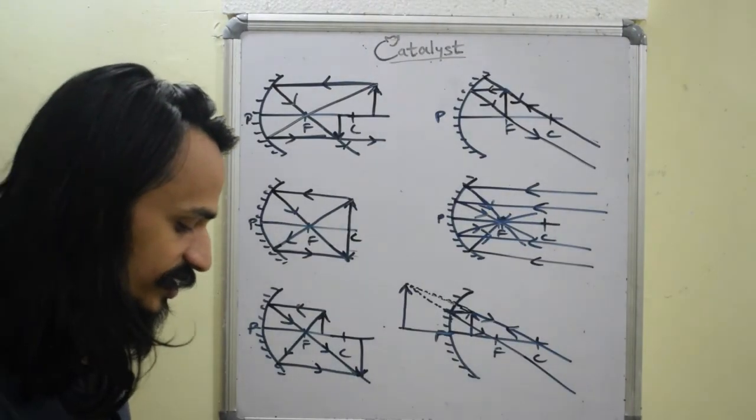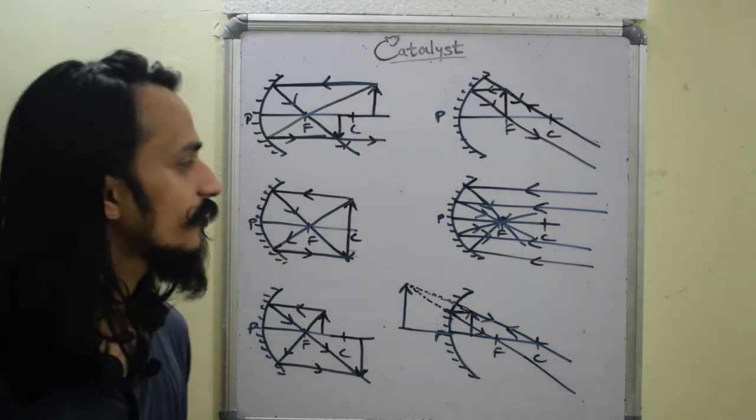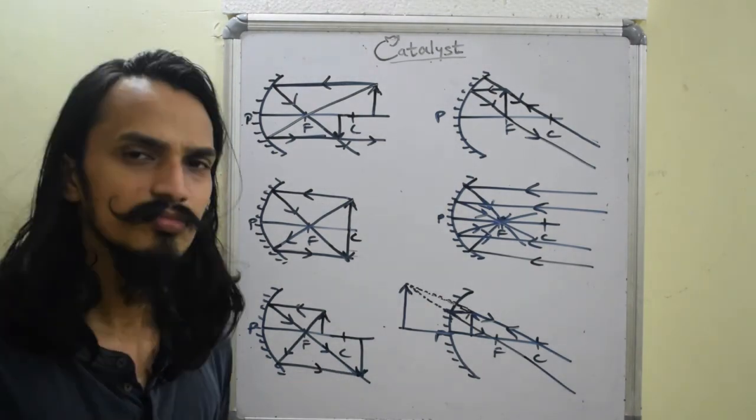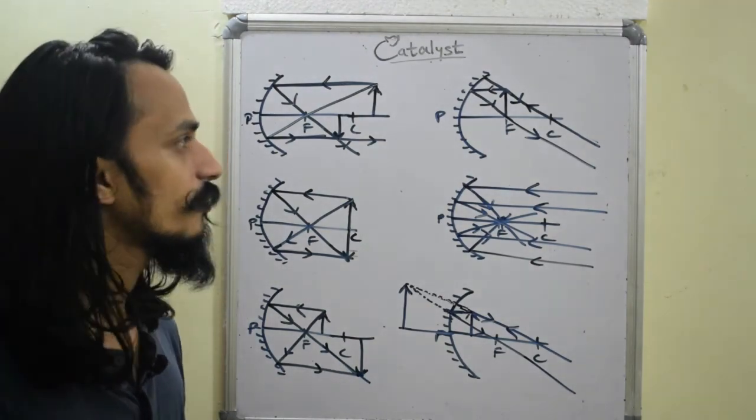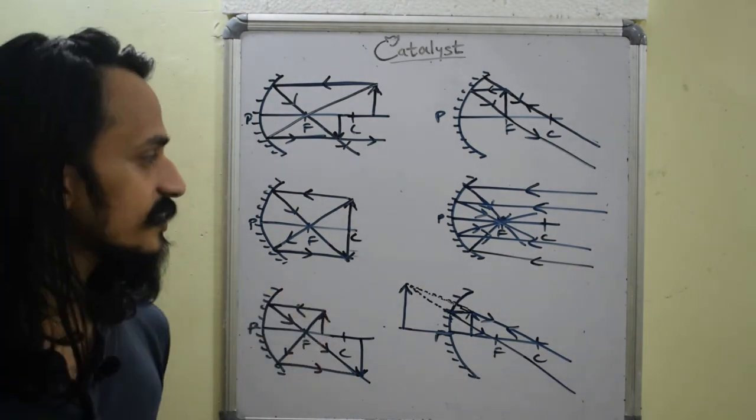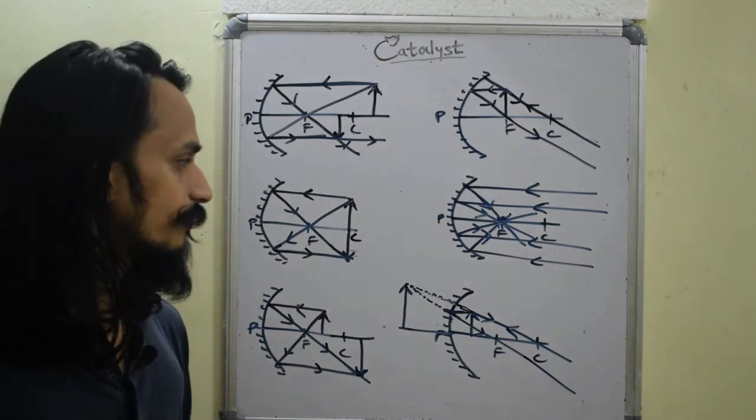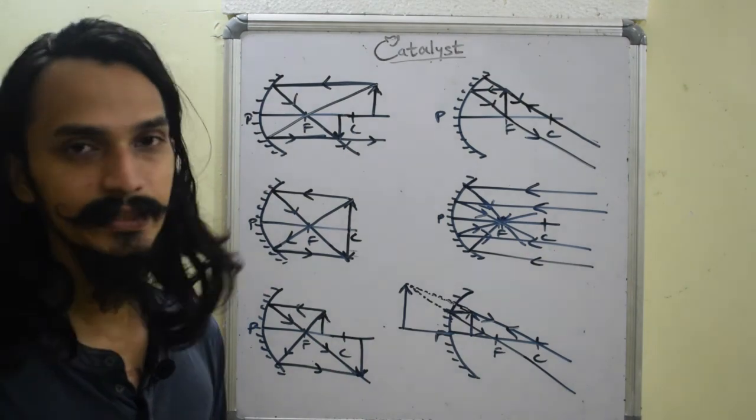So these are the six ray diagrams that come with concave mirrors and this is something that might come in the exam, so it's very important to practice these images. In the next class we'll be looking at a small topic of convex mirror also which is very small. For today, this is it.